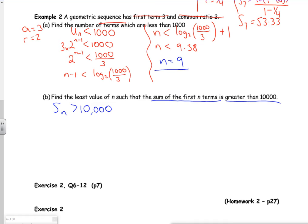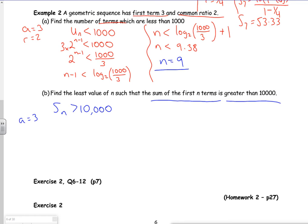I know that a is 3. I know that r is 2. And I want to work out what n is. So because r is 2, I want it as the r minus 1. So I'm looking at a, r to the n minus 1 over r minus 1 is greater than 10,000. So a is 3. 2 to the power of n minus 1 over 2 minus 1 is greater than 10,000.